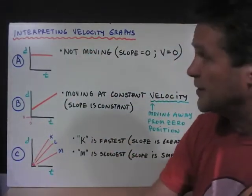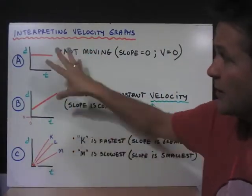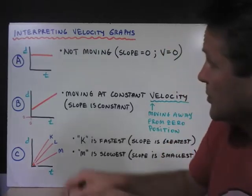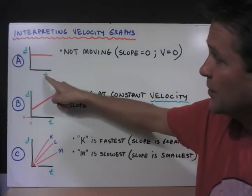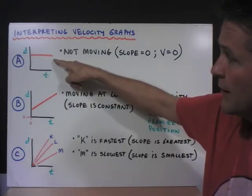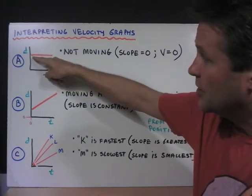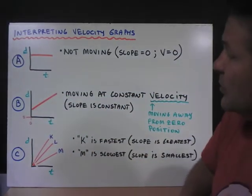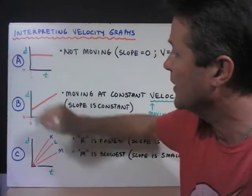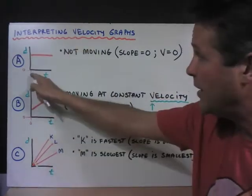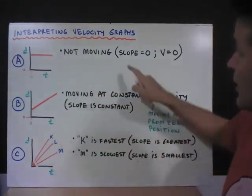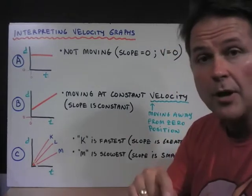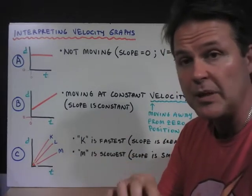So now let's have a look at interpreting velocity graphs. The graphs can take many different shapes. Graph A, we see that the distance versus time graph has a horizontal line. That shows us that the object is always at the same distance away from the zero point. Perhaps the object is at five meters away, and it's always at five meters away, so it's not moving. The slope is equal to zero, so therefore the velocity and the speed would also equal zero. Remember, velocity is speed and direction. Speed does not consider direction.